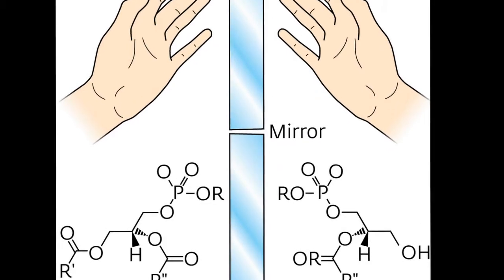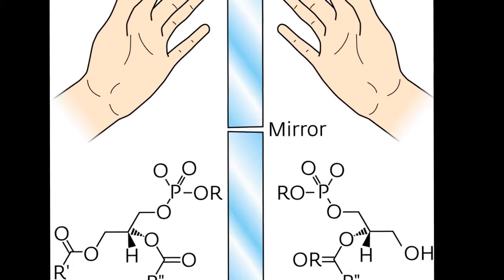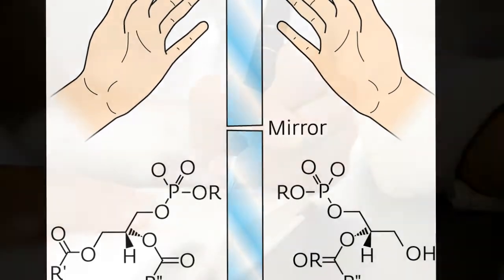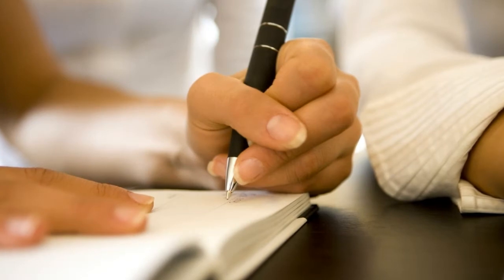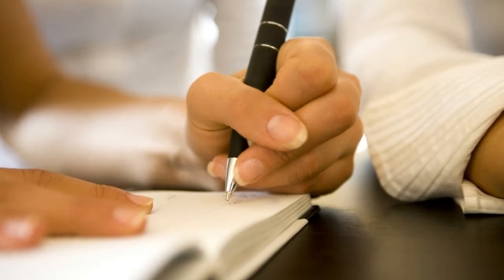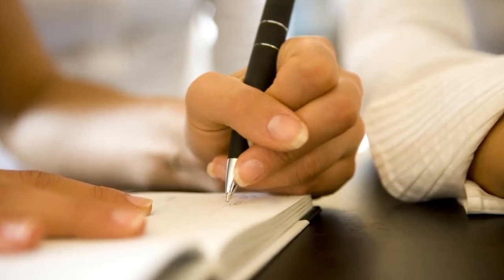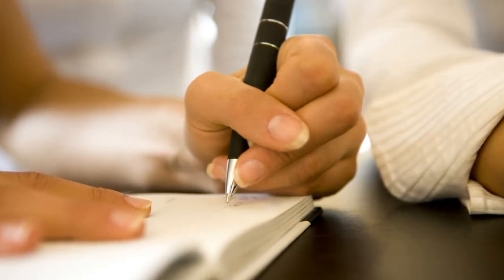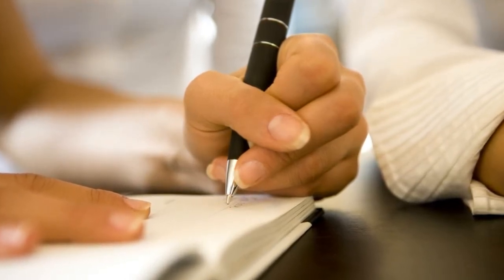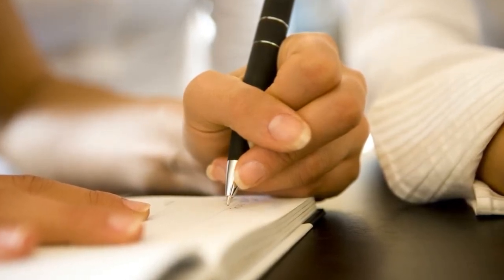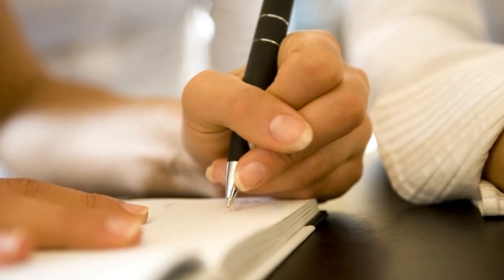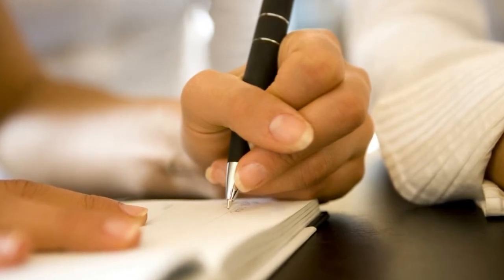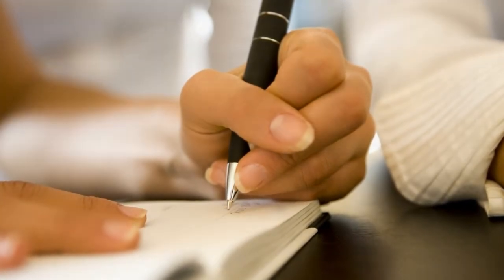Hand orientation is also shown to be developed in fetuses, most commonly determined by observing which hand is predominantly held close to the mouth. There are also reports of left-handers drawing figures facing to the right.